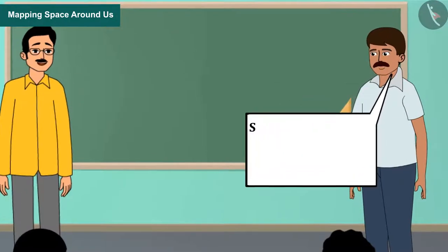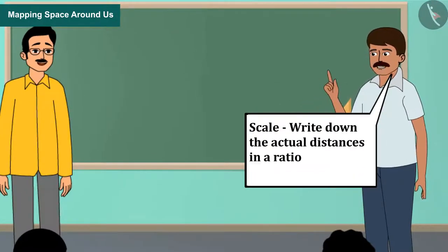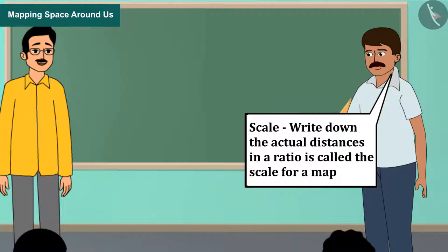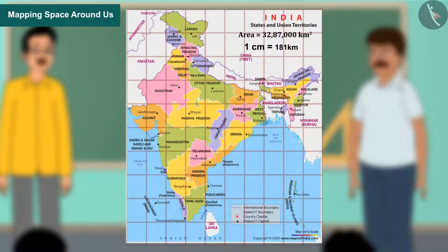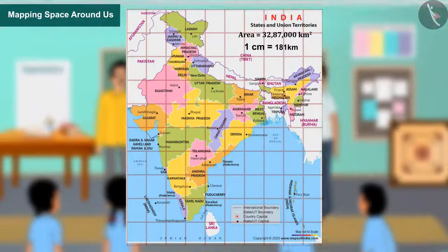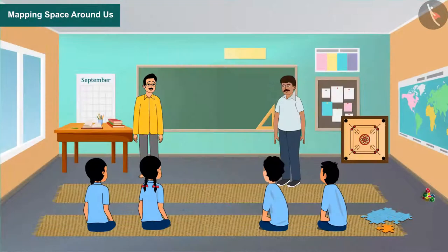Writing down the actual distances in a ratio is called the scale for a map. The area of India is millions of square kilometers. In the map of India, those millions of square kilometers are shown with the help of centimeters. Let's understand some important things related to scale.